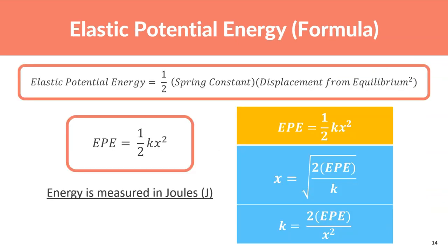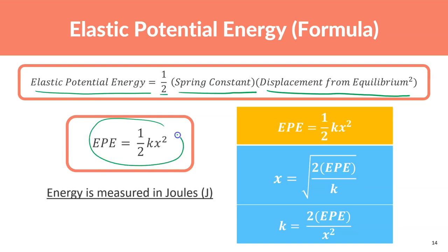The formula for elastic potential energy is EPE = ½kx², where k is the spring constant (how stiff something is) and x is the displacement from equilibrium (how much it's stretched or compressed). A pen cap has a low spring constant; a car's suspension spring has a very high one. The more it's stretched or compressed, the more energy is stored.